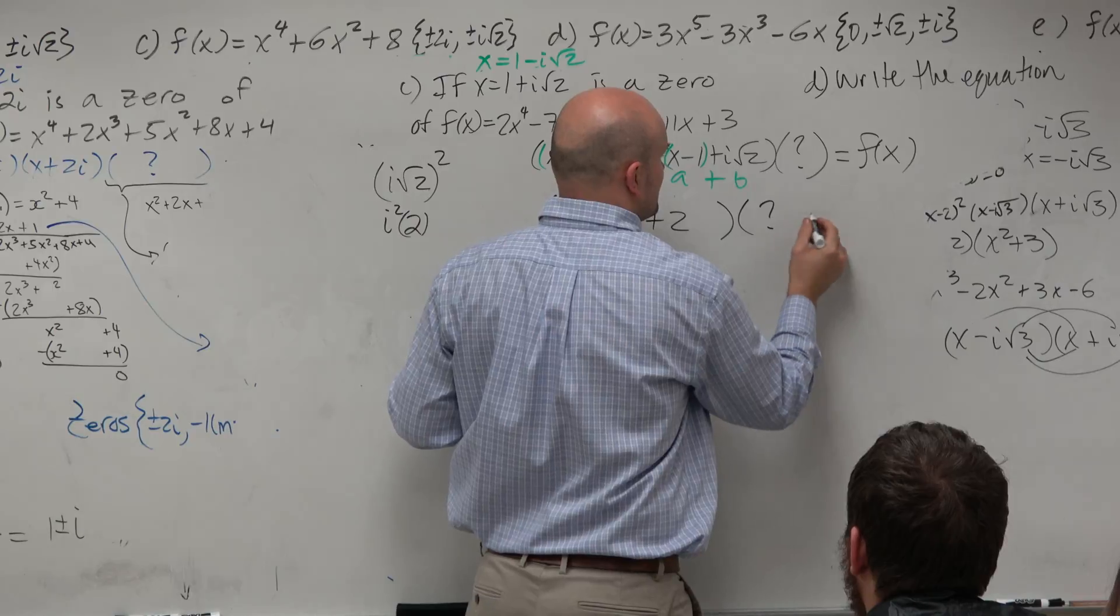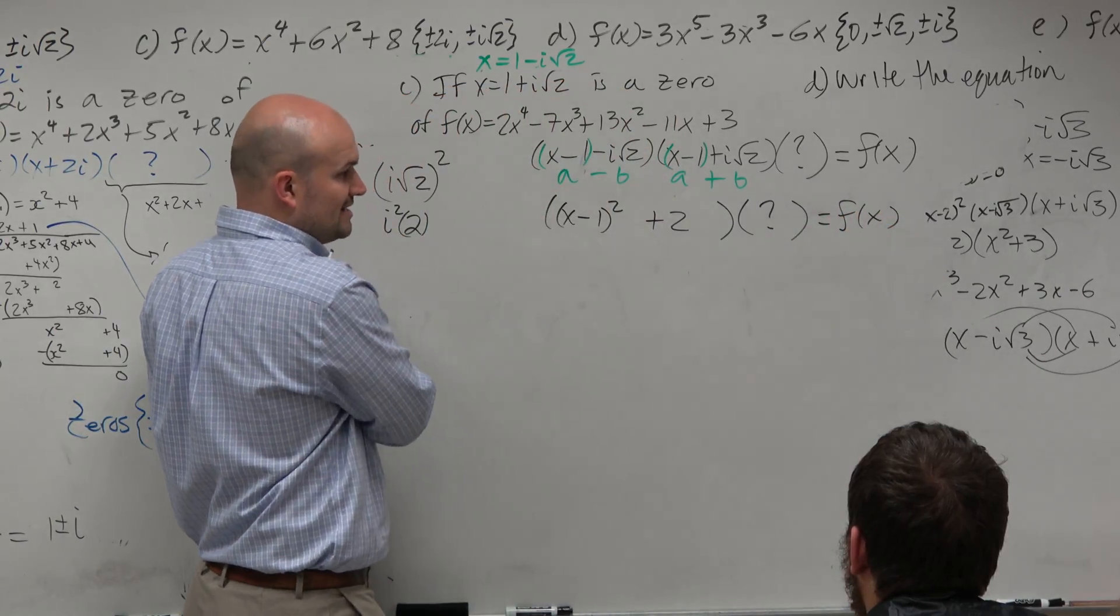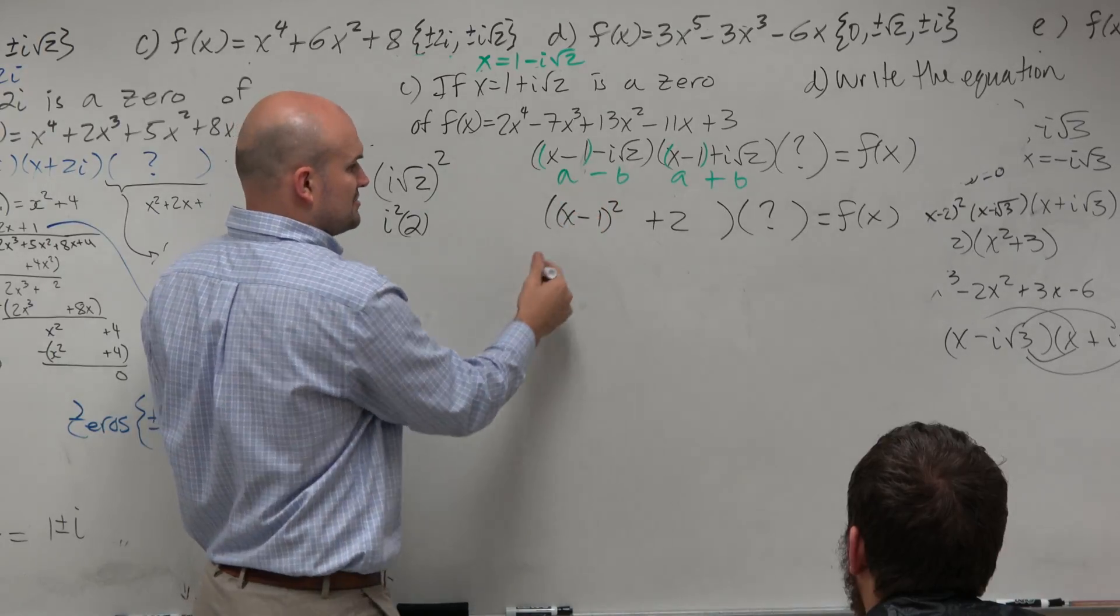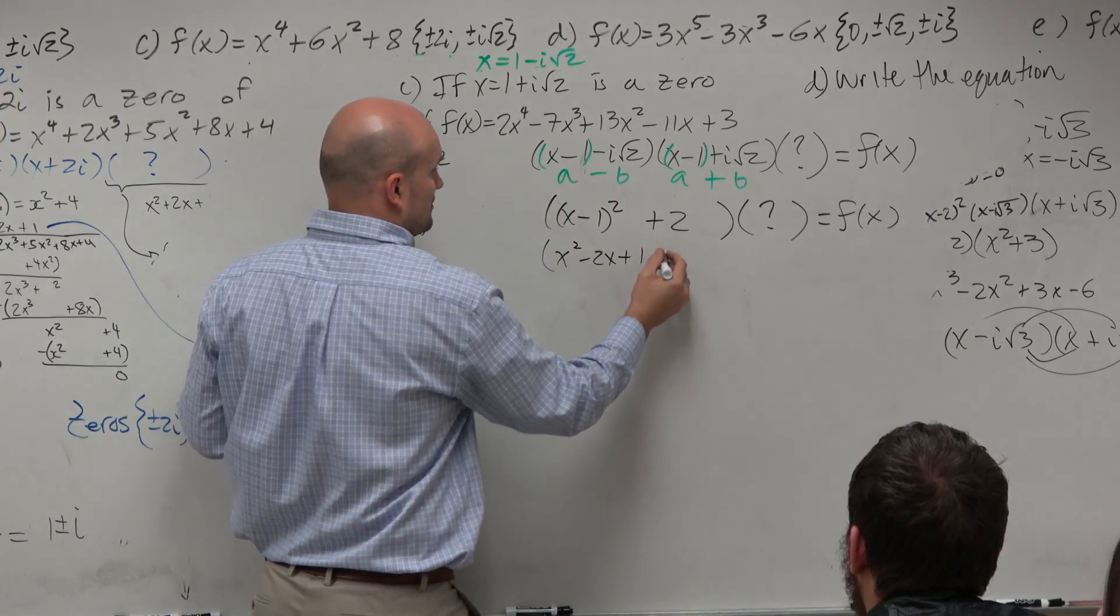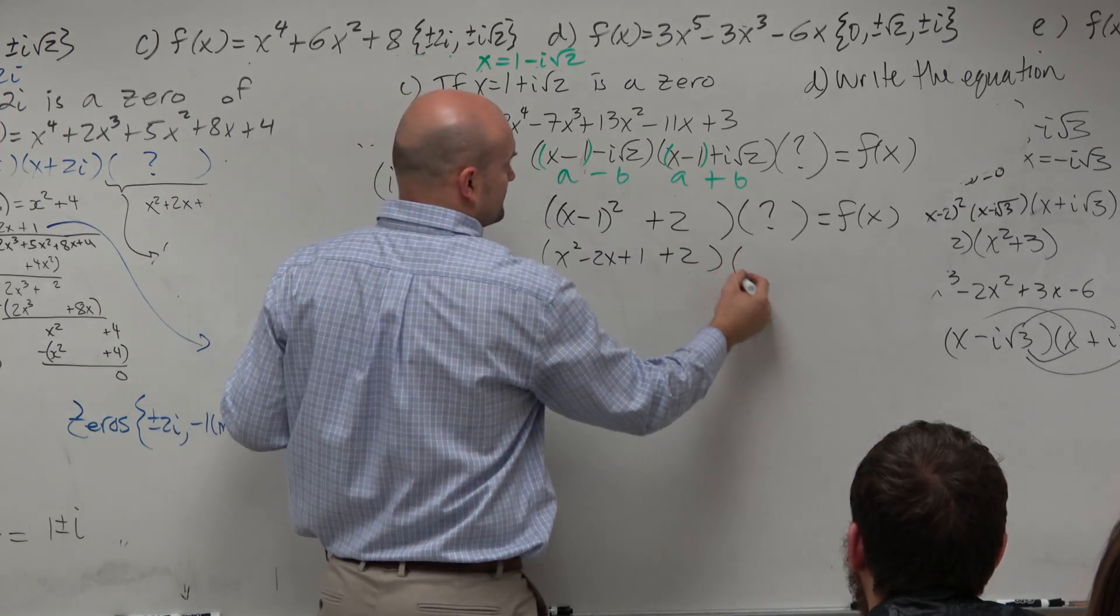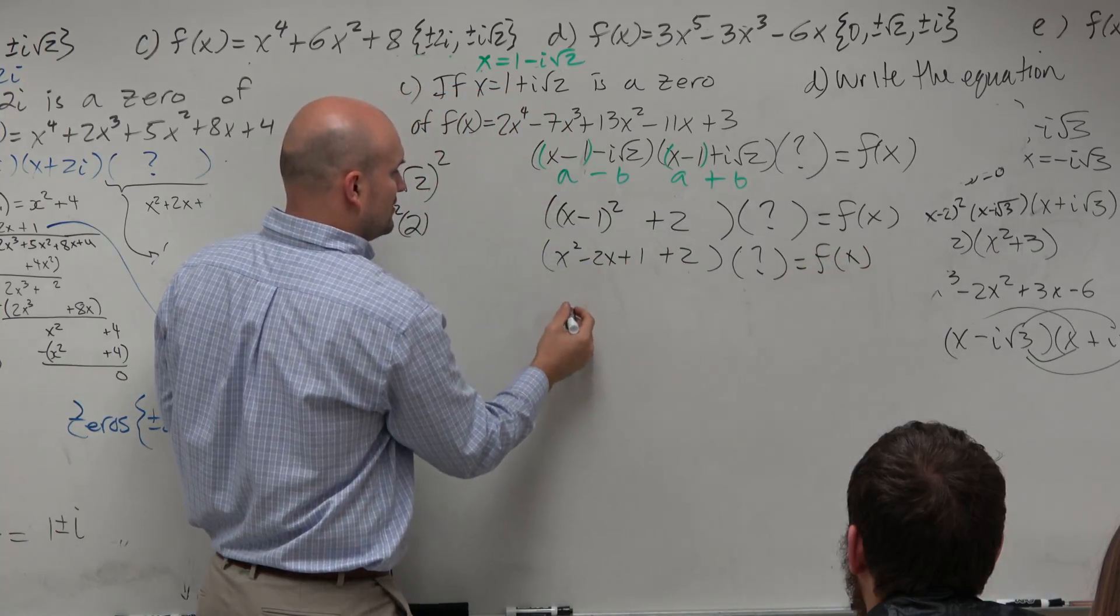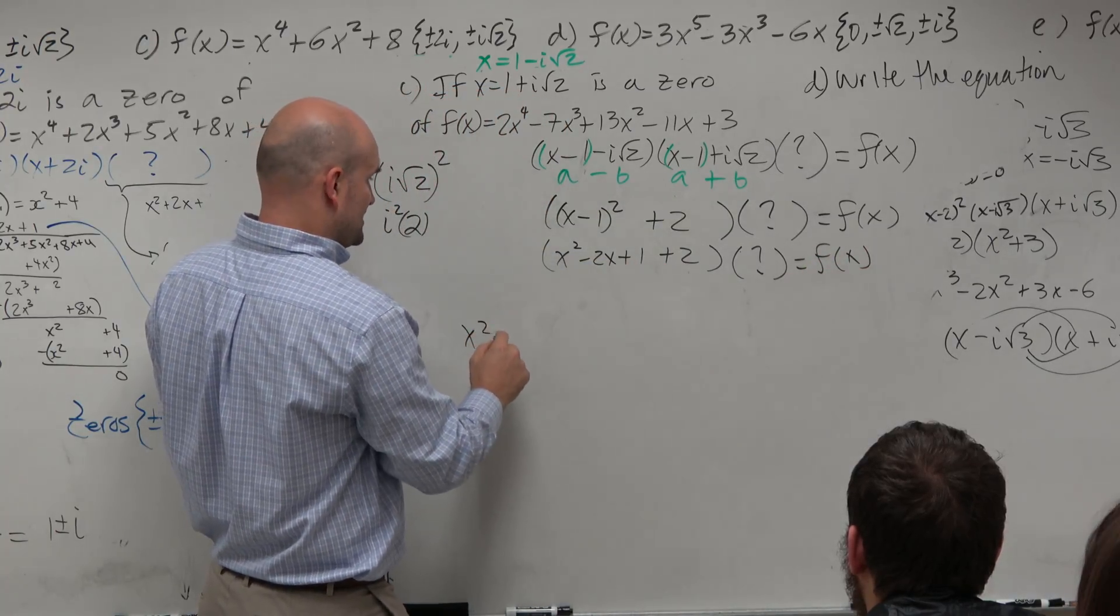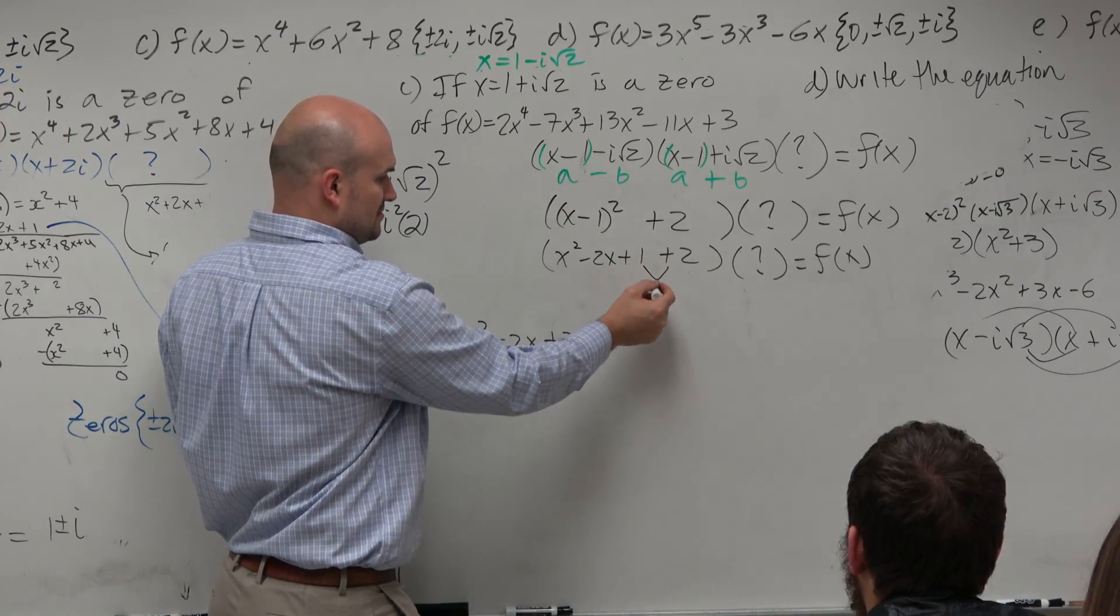And then, again, that's times something equals f of x. Now, can we expand x minus 1 squared? And this is where the help for this. Yes, you should be able to expand this. So, therefore, I finally have x squared minus 2x plus 3, which I'm going to write. Okay?